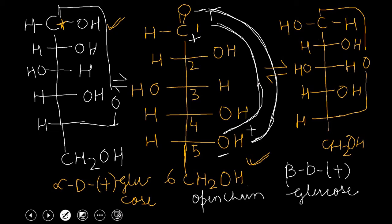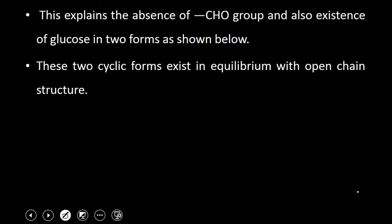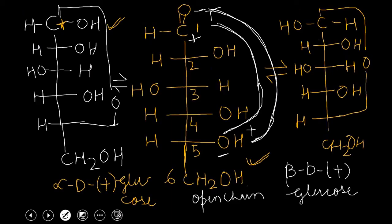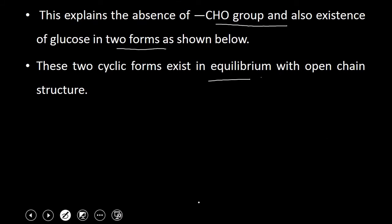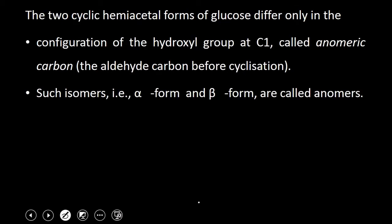From these two structures of alpha-D-plus-glucose and beta-D-plus-glucose, we can see that as the aldehyde group is not free, we can understand why glucose is not showing some of the reactions mentioned at the beginning. This explains the absence of the free CHO group and also the existence of glucose in two forms. These two cyclic forms exist in equilibrium with the open chain structure.